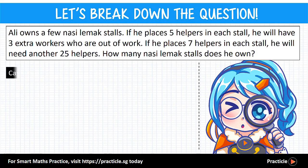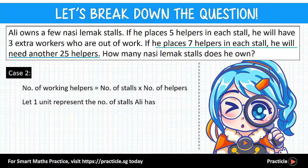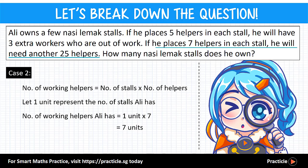Now let's look at case 2. This time, Ali places 7 helpers at each store, and by doing that he will actually need another 25 helpers. If we let 1 unit represent the total number of stores, the total helpers needed at the stores would be 1 unit times 7, giving us 7 units. However, since he is short of 25 helpers, he doesn't actually have 7 units. Instead, his actual number of helpers would be 7 units minus 25.